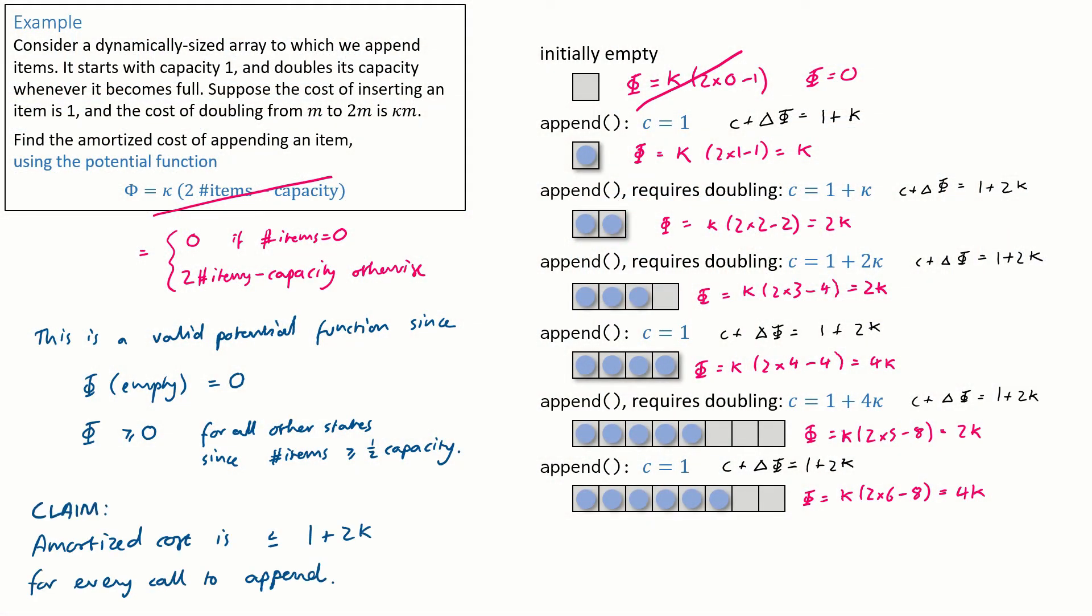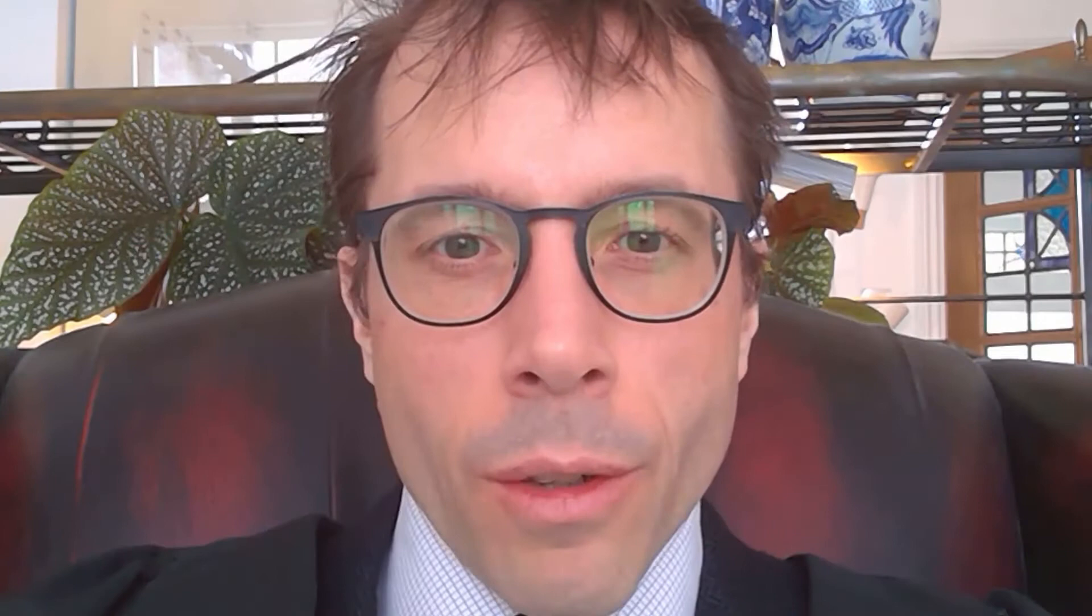Anyway, what you should have found when you work through all of these cases is that the amortized cost is equal to 1 plus 2 kappa for every single append here, apart from the first where it's equal to 1 plus kappa. So, it seems the amortized cost is less than or equal to 1 plus 2 kappa for every single call to append. That is indeed true. Now, let's write out a proper justification rather than just illustrations for small examples.